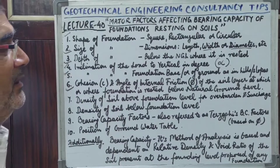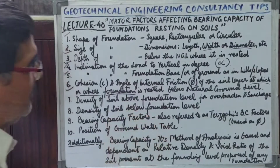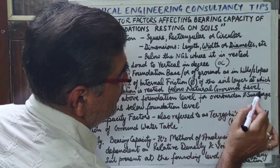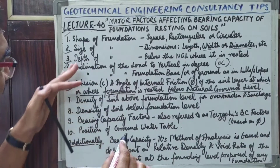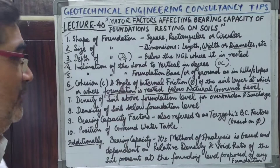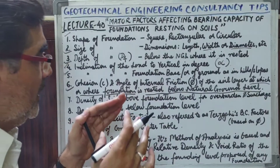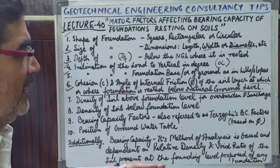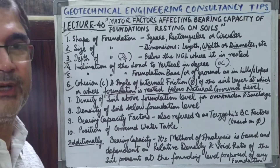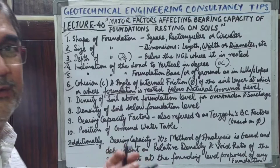Point six is the cohesion and angle of internal friction of the soil layer where you are proposing your foundation for that particular structure, to be rested below the natural ground level at depth Df. This cohesion and angle of internal friction is found from samples collected at site and tested in the laboratory, using the direct shear method or triaxial method, as discussed in previous lectures.